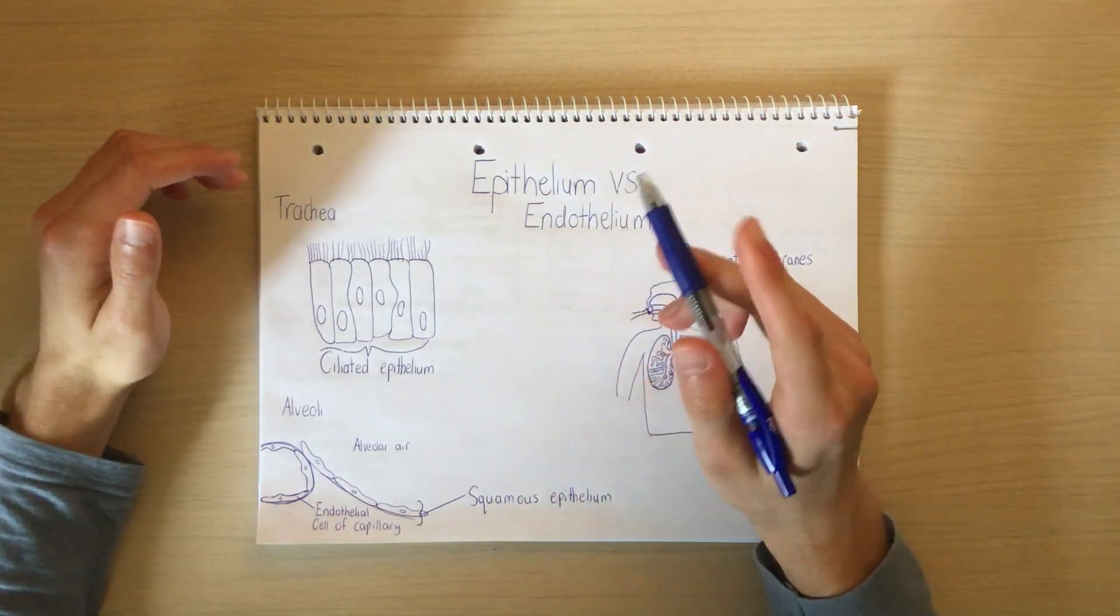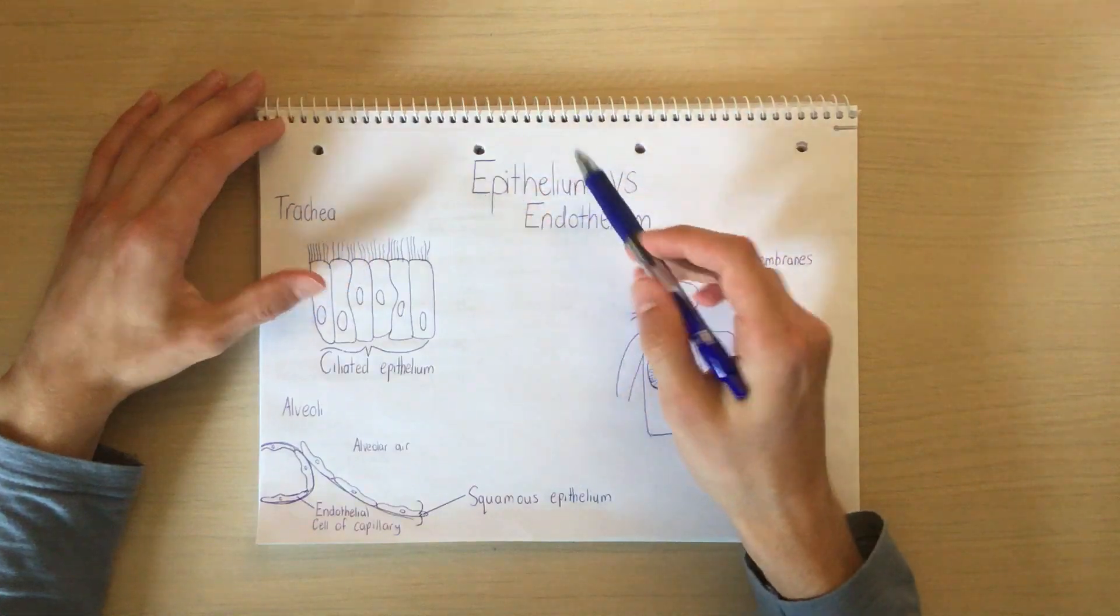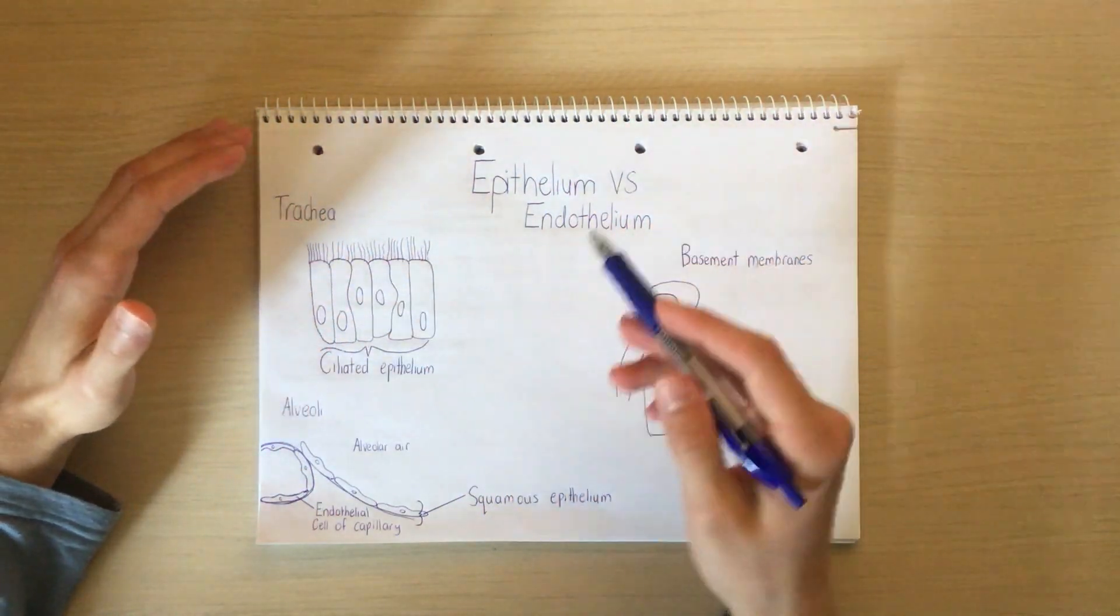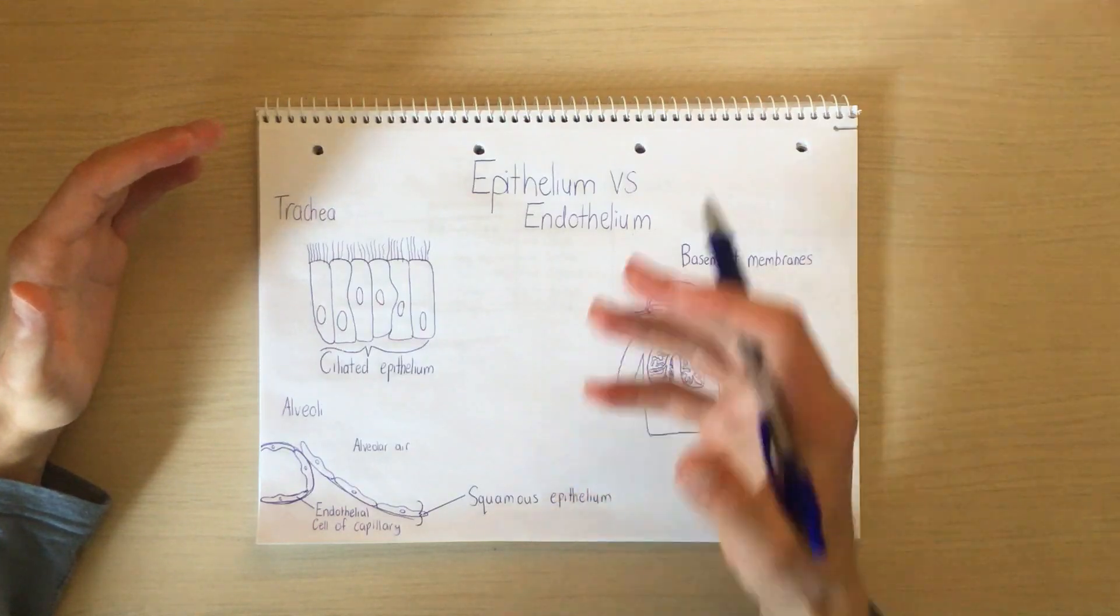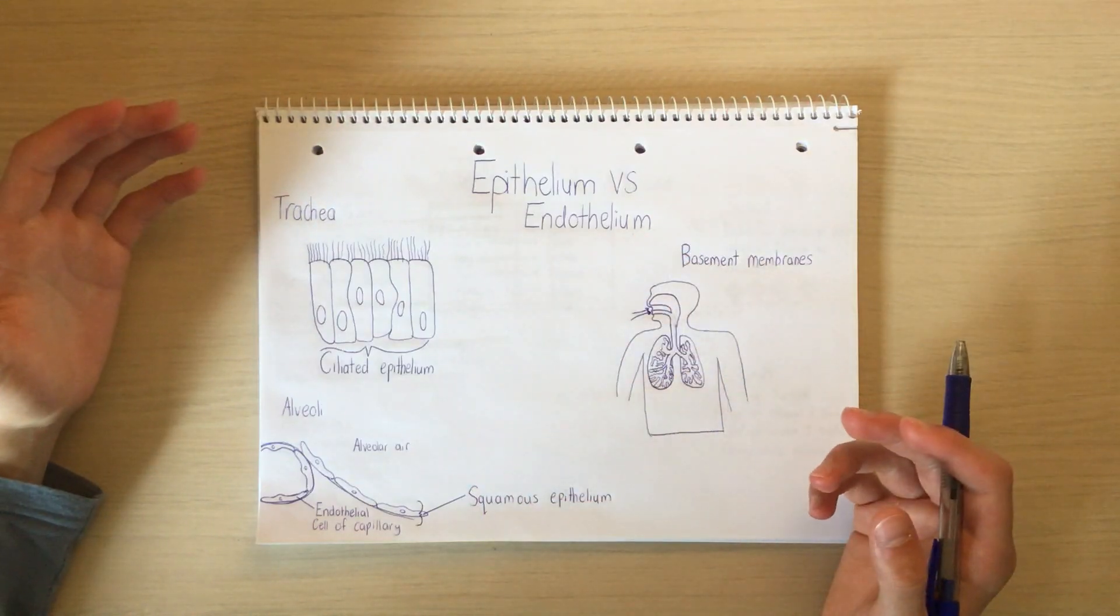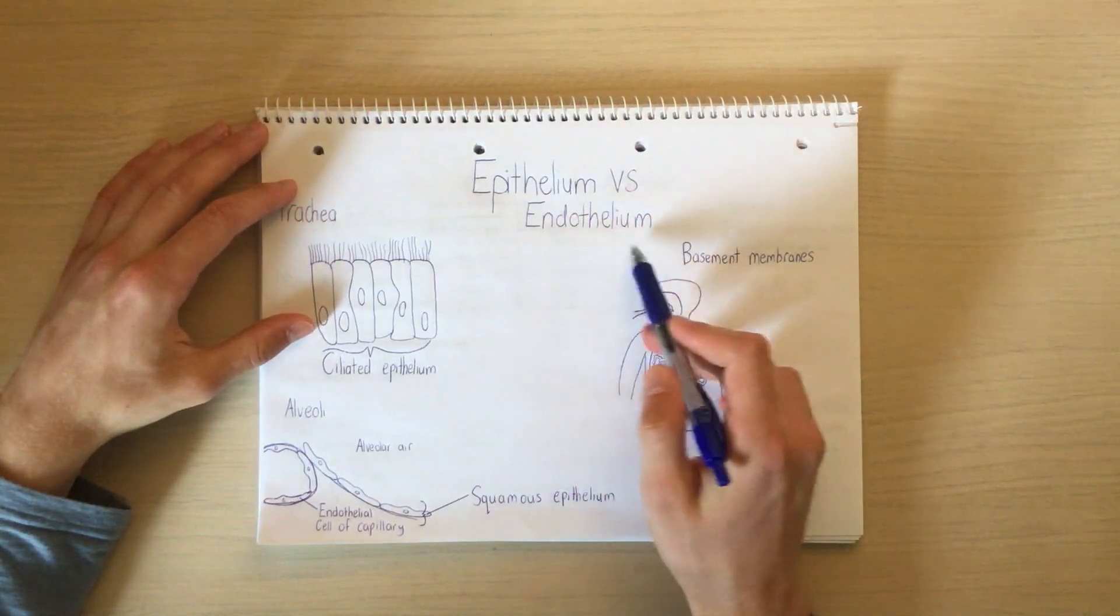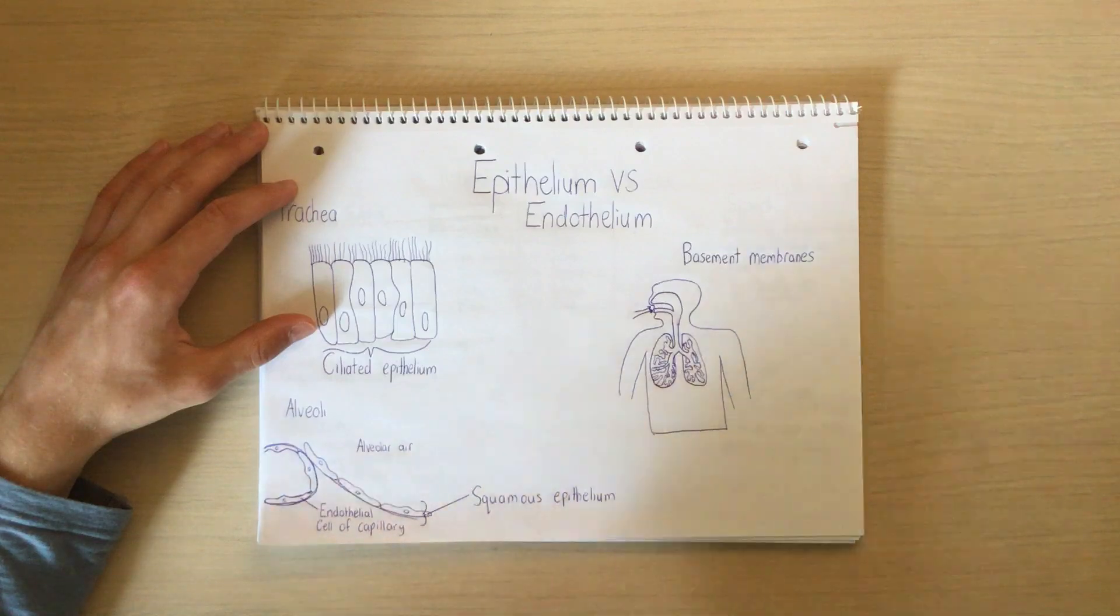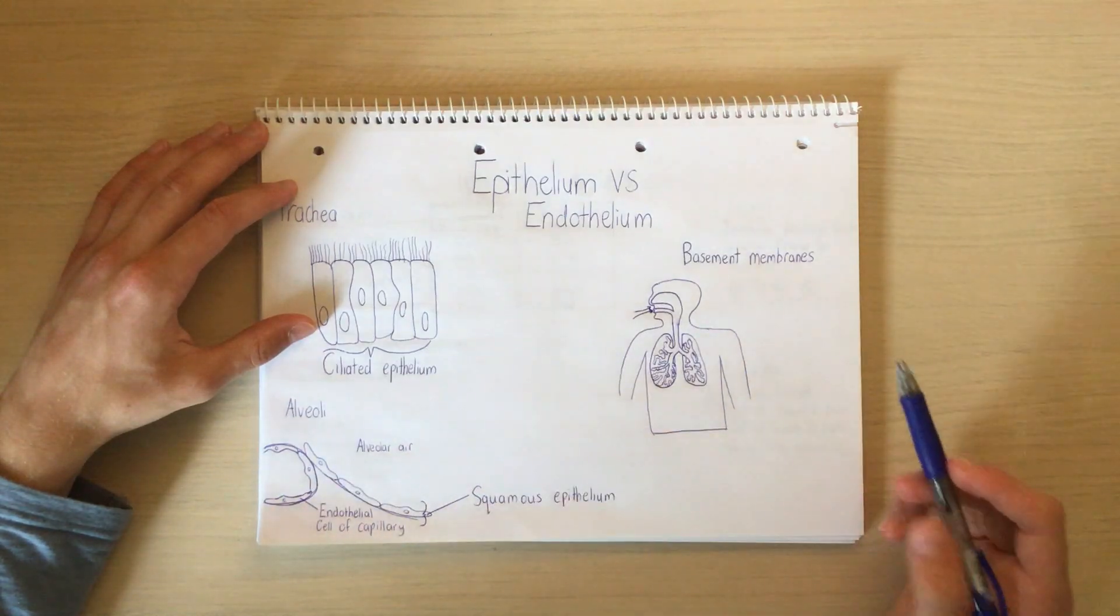Now it's important to understand, epithelium refers to the tissue as a whole, whereas epithelial refers to a cell within that tissue, as an example. And likewise for endothelium, so endothelium, endothelial. Endothelial refers to the cell, endothelium refers to the tissue as a whole.